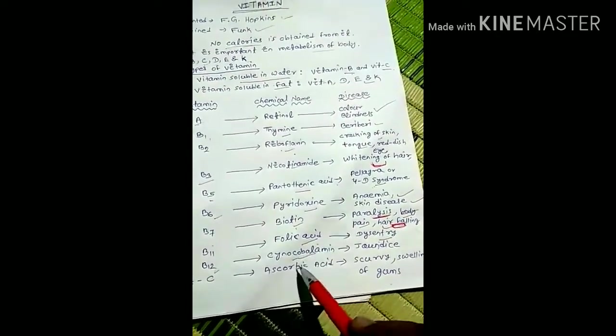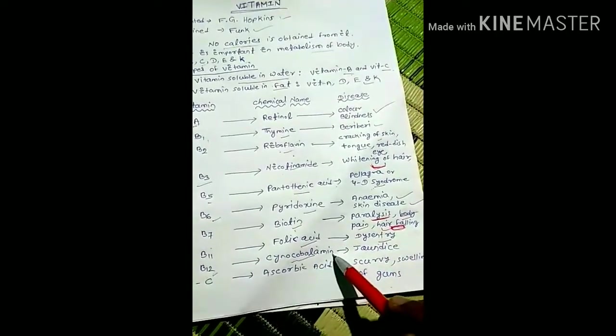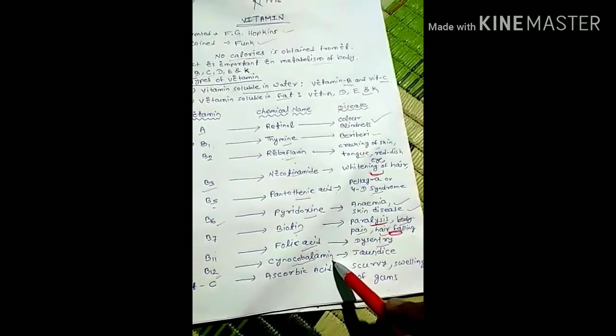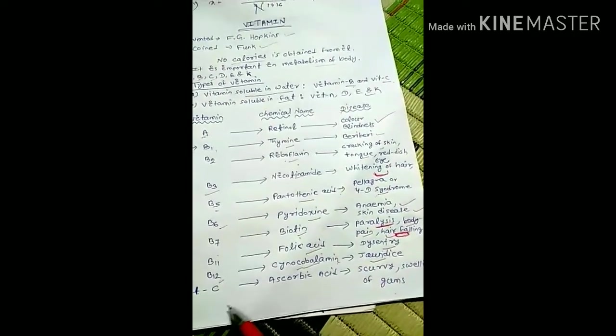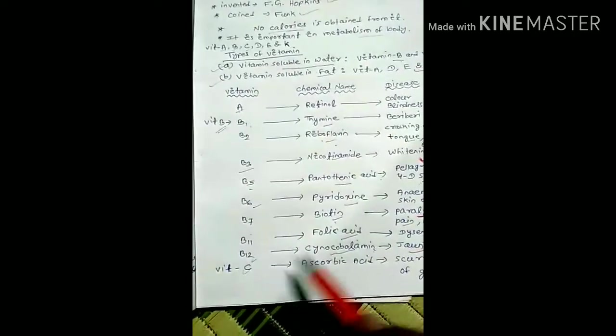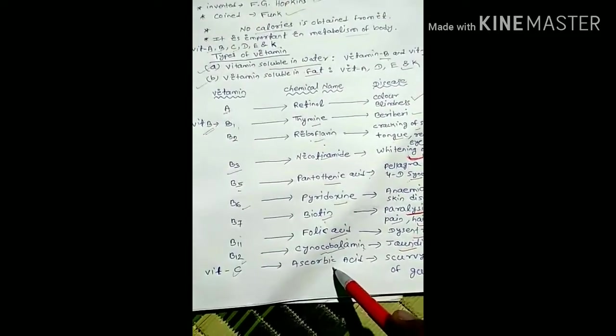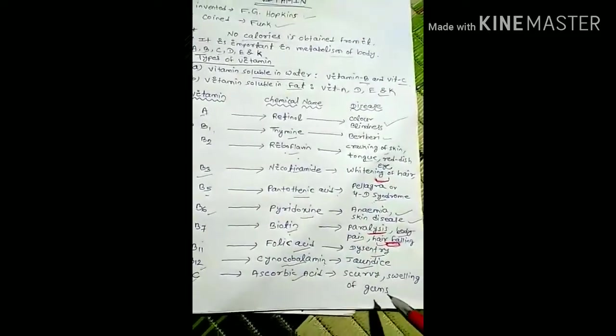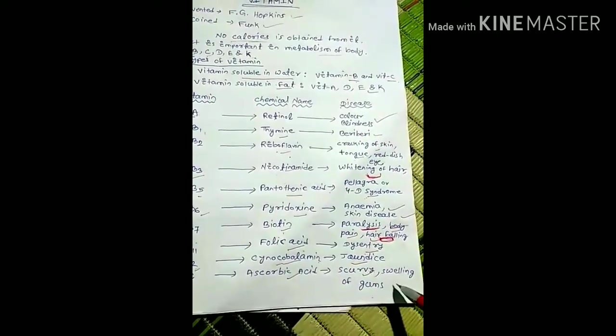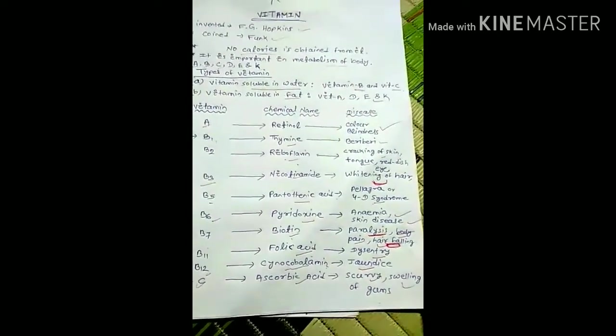Vitamin C is known as ascorbic acid, and absence of ascorbic acid causes diseases like scurvy and swelling of gums.